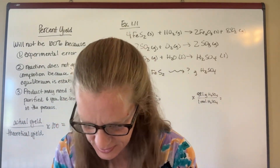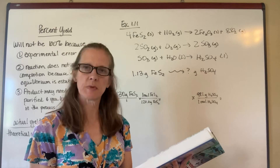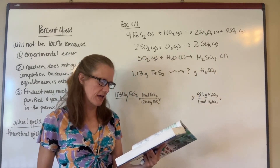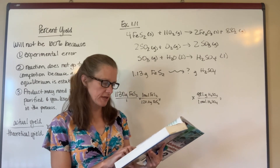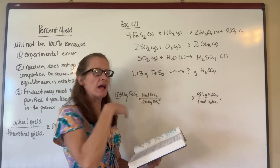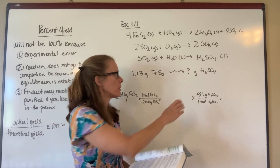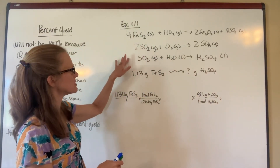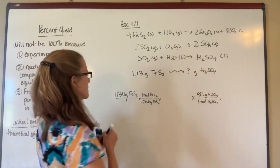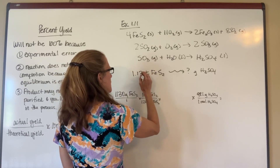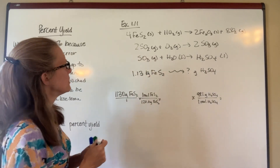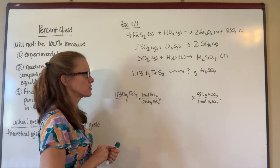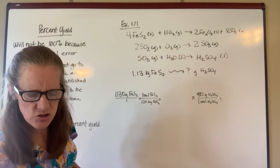Let's look at Example 1.11. Sulfuric acid is something that we do a lot of exporting of, and I've got three equations to make sulfuric acid. I'm going to start with 1.13 kilograms of FeS₂ — I made a mistake on the slide, it should be kilograms, not grams. I have an excess of oxygen and an excess of water. So how much H₂SO₄ should I produce? It's not a simple problem because I've got three equations that I'm working with.